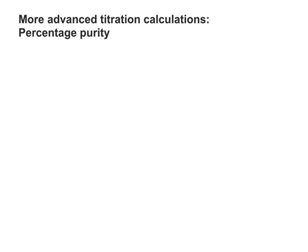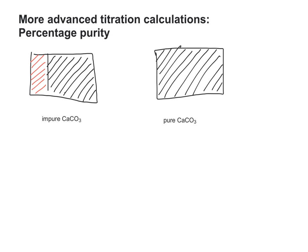So first let's look at what percentage purity might refer to. If I have two solid samples of calcium carbonate, one impure and one pure, in the impure sample the impurity would be the section shaded in red, and the section shaded in black would be pure calcium carbonate.